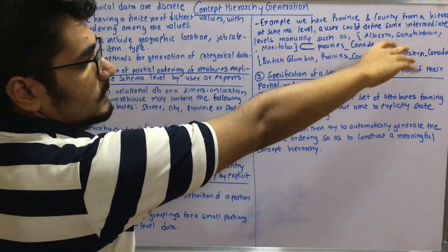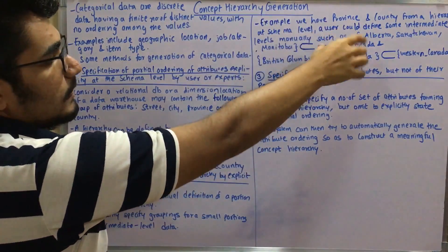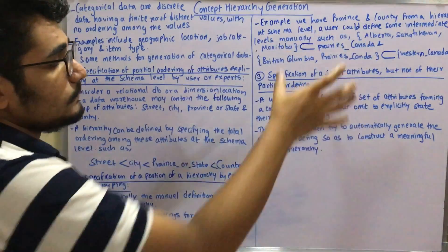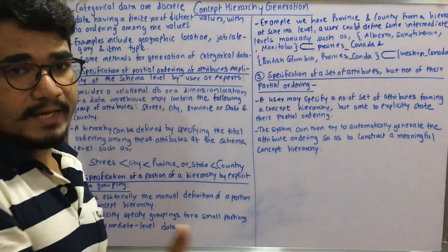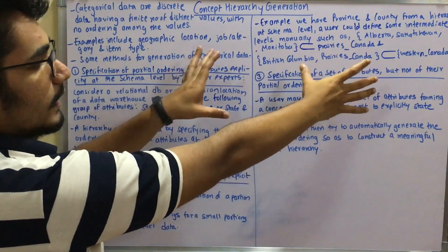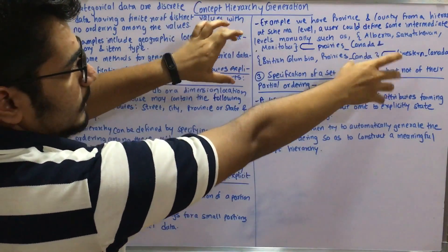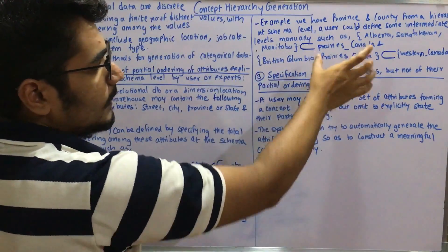A user could define some intermediate levels manually, such as provinces like Alberta, Saskatchewan, and Manitoba - these are provinces in Canada. British Columbia and prairies of Canada belong to Western Canada.